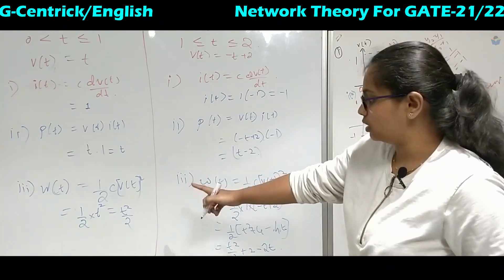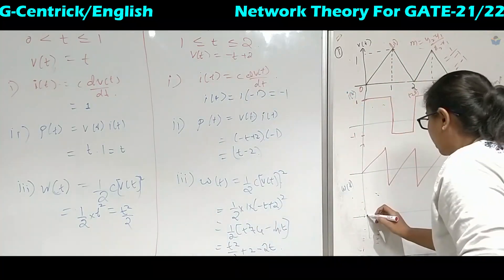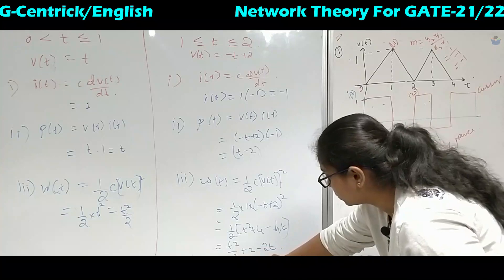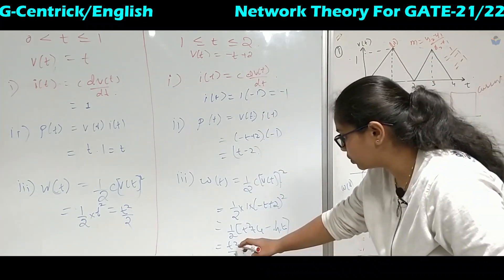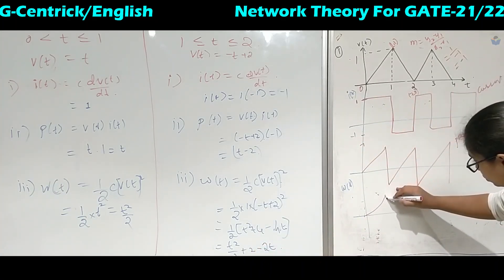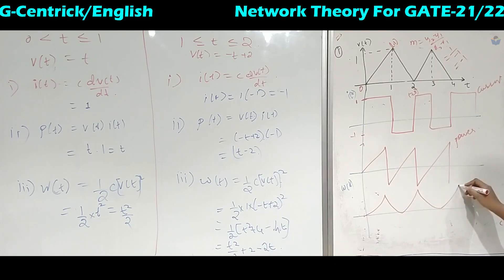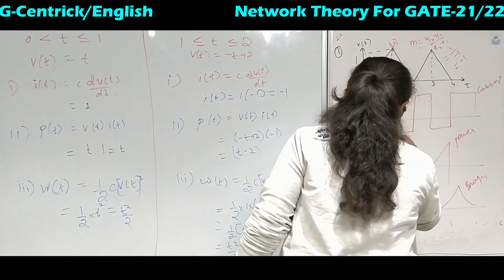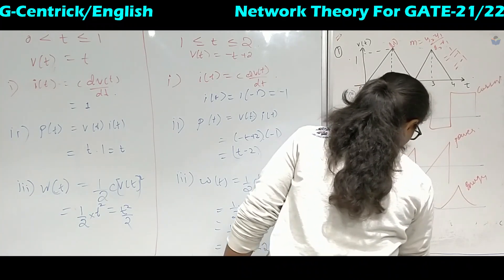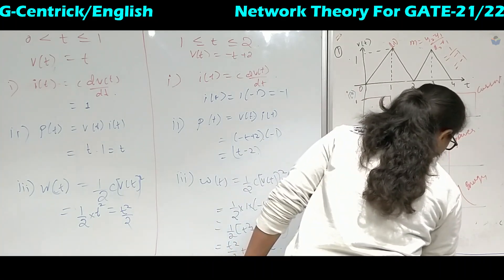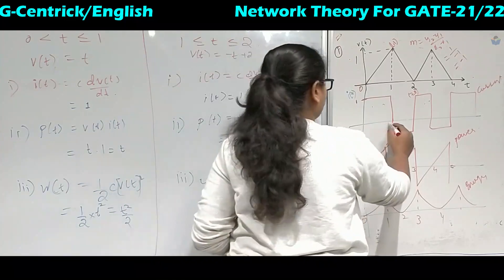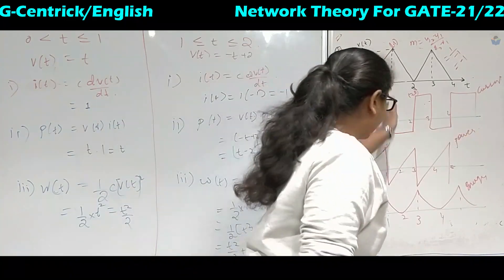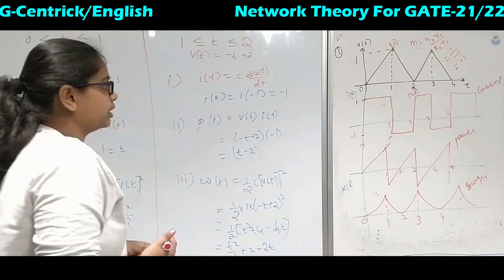For the energy waveform: from 0 to 1 the equation t squared by 2 is a parabolic signal. From 1 to 2 the equation is t squared by 2 plus 2 minus 2t. Putting t equals 1: 1/2 plus 2 minus 2 equals 1/2. Putting t equals 2: 4/2 plus 2 minus 4 equals 0. So the energy waveform rises parabolically from 0 to 1, and returns back to 0 by t equals 2. This is how we solve the graphical problem.